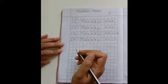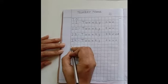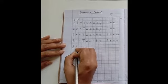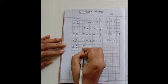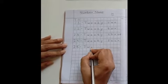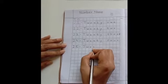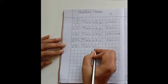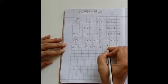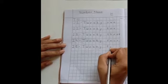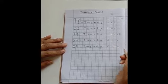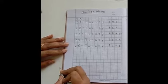Now the next number is 25. T-W-E-N-T-Y, 20, F-I-V-E, 5. 25.